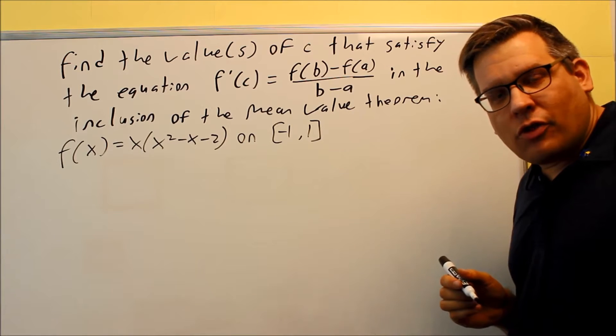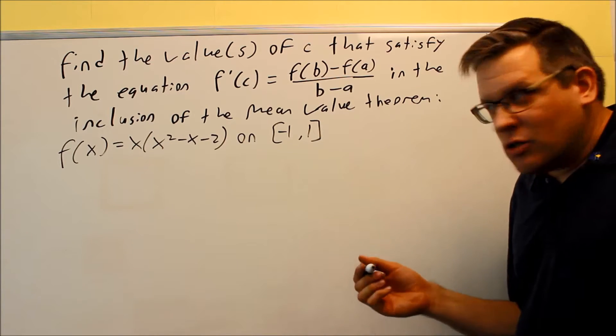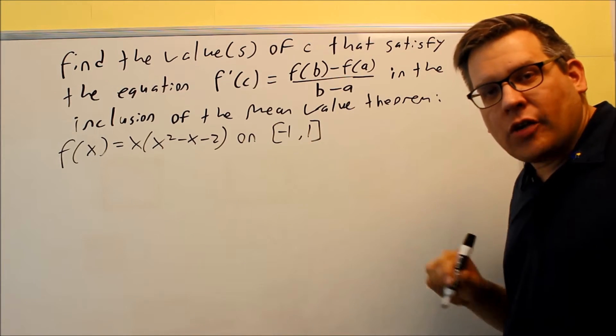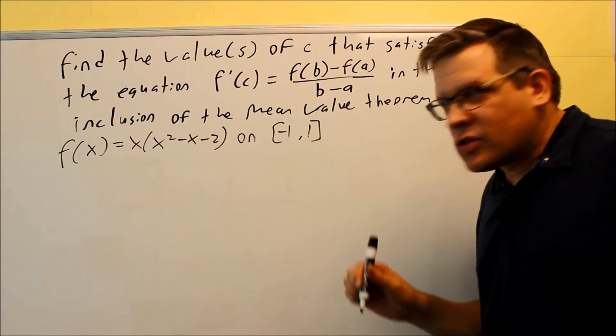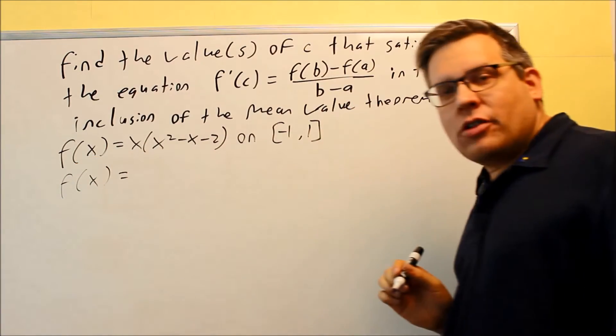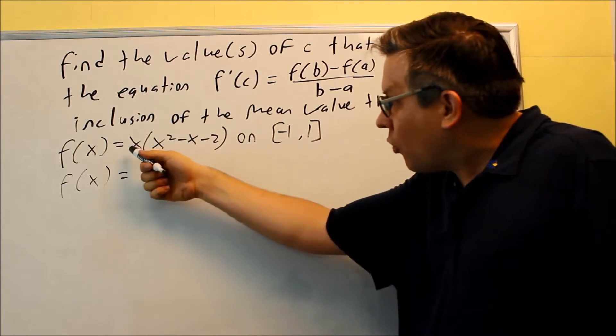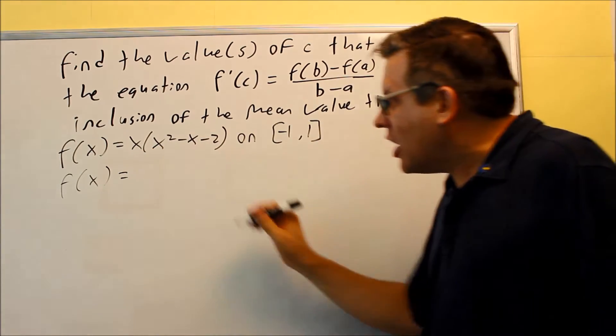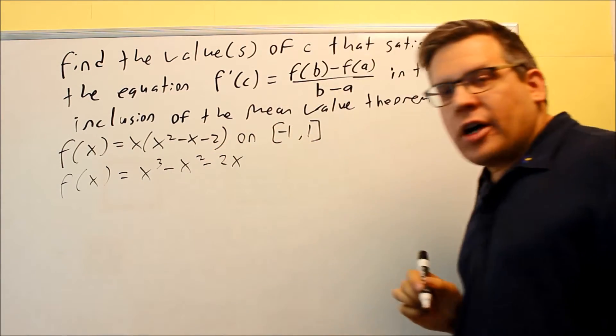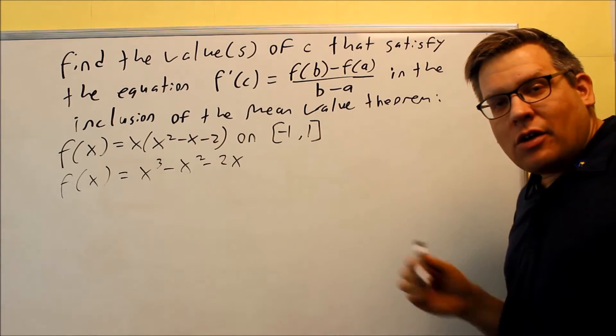Now the next thing we're going to do is we're going to look at the derivative. We're going to make sure that the derivative is also continuous on the open interval from negative 1 to 1. Let's do that now. Let's find the derivative. Now before I find the derivative, normally I would have to do a product rule with this, but what we can do here is because there's only a single value for X, I'm just going to make this easier by multiplying through by X first because then all I have to do is apply the power rule.